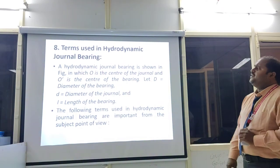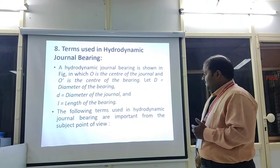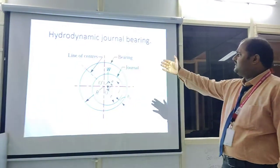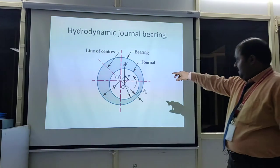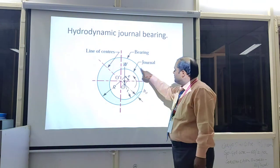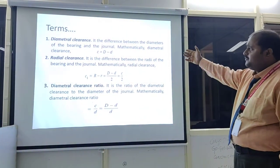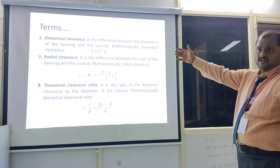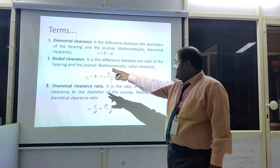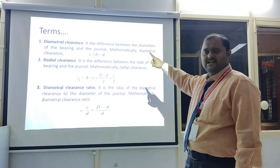The terms used in hydrodynamic journal bearing: the outer part is the bearing and the inner part is the journal, connected by the line of centers. The first term is diametral clearance C, which is the difference between the diameters of the bearing and the journal: C = D − d, where D is the diameter of the bearing and d is the diameter of the journal. Radial clearance C₁ = C/2.